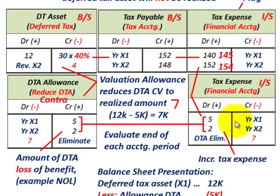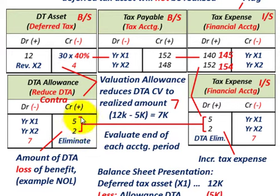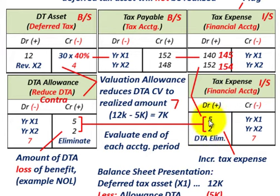For year X2, we realized there is another $2,000 of this $12,000 deferred tax asset that isn't going to be realized. So we've credited or increased our deferred tax asset allowance account by that amount, then we debit or increase our tax expense — same rationale as year X1 where we had $5,000 we said we're not going to realize.